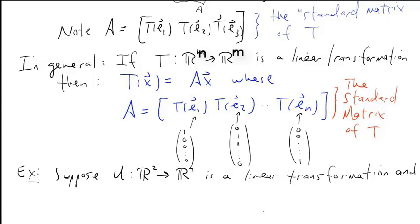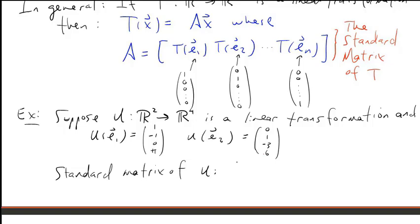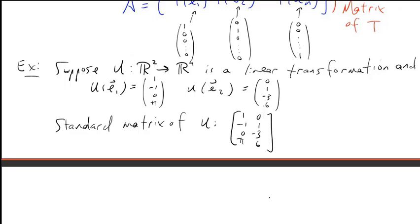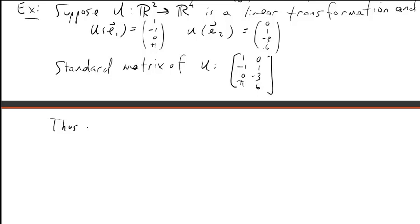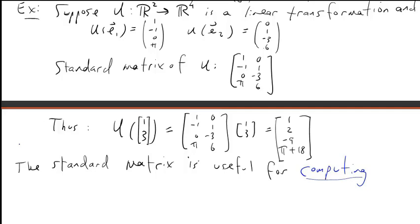For example, suppose U from R2 into R4 is a linear transformation where U of E1 equals (1, -1, 0, π) and U of E2 equals (0, 1, -3, 6). The standard matrix of U has first column U of E1 — that's (1, -1, 0, π) — and second column U of E2 — that's (0, 1, -3, 6). The standard matrix allows us to compute U of any vector, for example U of (1, 3), by simply multiplying the standard matrix times that vector.